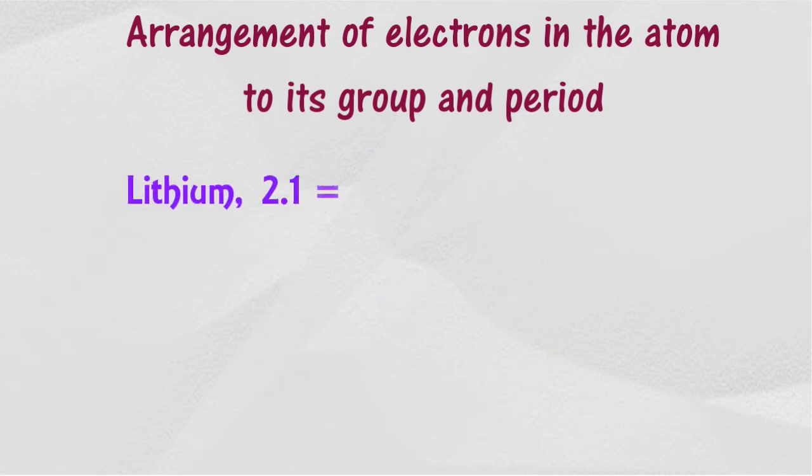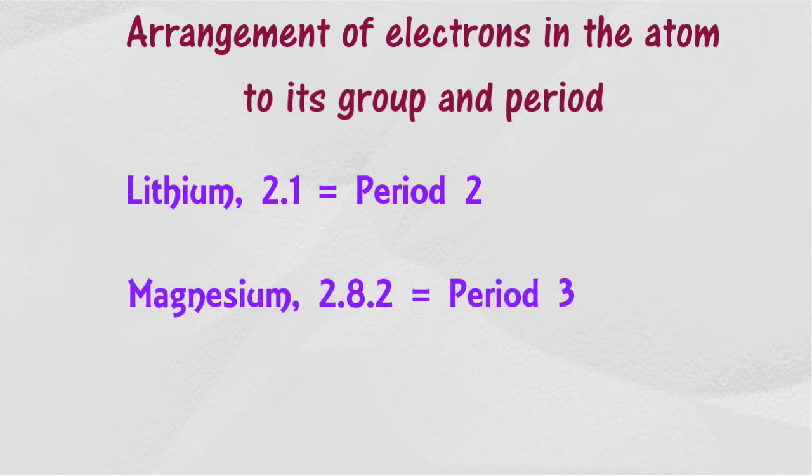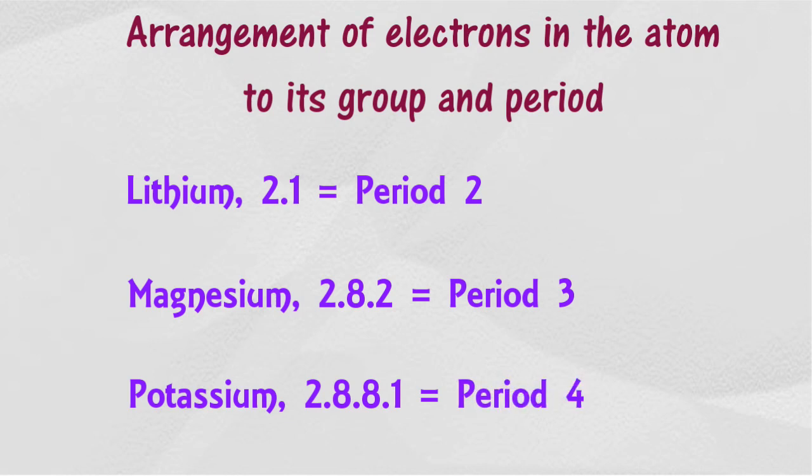For example, lithium has two shells filled with electrons, thus the lithium period in the periodic table is 2. Same goes with magnesium, it contains 3 shells with electrons, period in the periodic table is 3. Potassium belongs in period 4 because it contains 4 shells filled with electrons.